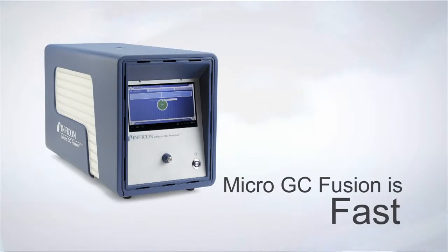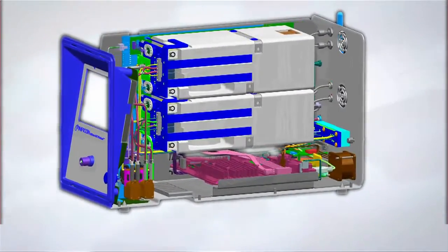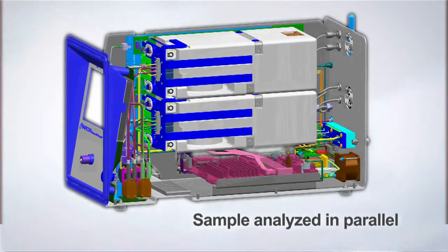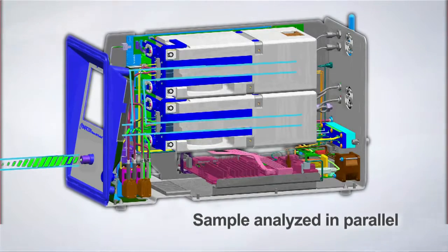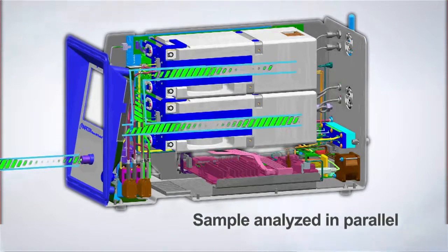Micro GC Fusion is fast. Using a modular architecture, Fusion allows a sample to be analyzed in parallel by multiple GC modules. Each module is optimized to measure at maximum speed, providing fast and accurate results.